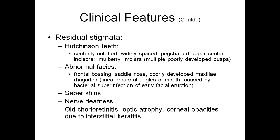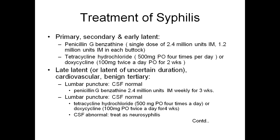Regarding treatment of syphilis — it is very easy and very cheap. Primary, secondary, and early latent syphilis: Benzathine G penicillin, single dose of 2.4 million units intramuscular — 1.2 million units intramuscular in each buttock. Tetracycline hydrochloride 500 mg orally four times per day or doxycycline 100 mg twice a day for two weeks. For late latent or latent of uncertain duration — like cardiovascular syphilis or benign tertiary — if lumbar puncture shows CSF is normal, then Benzathine G penicillin again as above.